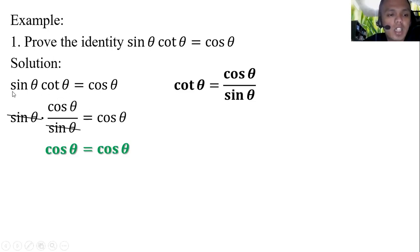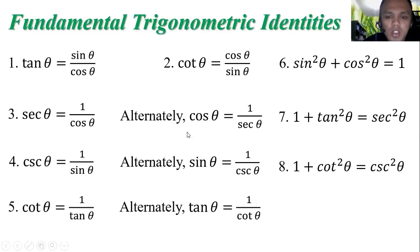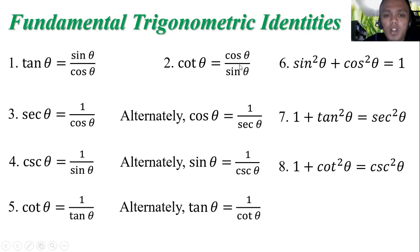To make sine theta cotangent theta become cosine theta, we replace cotangent theta with cosine theta over sine theta. We cannot use sine theta on its own here because what we need is cosine. The value of cotangent theta is cosine theta over sine theta, which is already involved in the given expression.